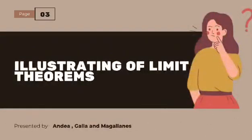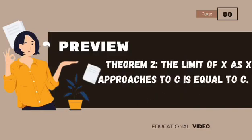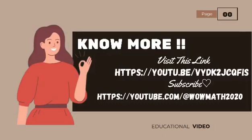In illustrating limit theorems, we all know that there are nine theorems. The first one is Theorem 1, which shows the limit of a constant is itself — if k is any constant, then the limit of k as x approaches c is equal to k. In Theorem 2, the limit of x as x approaches c is equal to c. This may be thought of as the substitution law, because x is simply substituted by c. If you want to know more about the other theorems, you can visit the link in the YouTube channel and don't forget to subscribe.